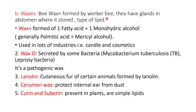The second type of simple lipid is wax. Bee wax is formed in the abdominal glands of worker bees. It is made from palmitic acid and myricyl alcohol, a type of monohydric alcohol. Bee wax is used in industries such as candle-making and cosmetics. Other types of simple waxes include a wax secreted by pathogenic bacteria, lanolin (found on the cutaneous fur of certain animals), cerumen (ear wax in humans), and cutin and suberin, which are present in plants.